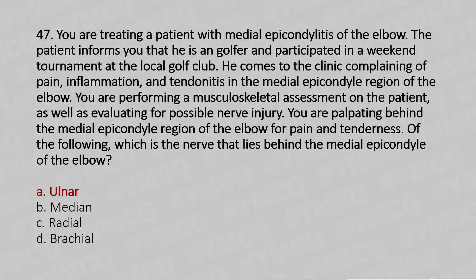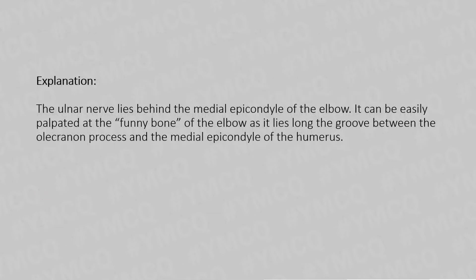The ulnar nerve lies behind the medial epicondyle of the elbow. It can be easily palpated at the funny bone of the elbow, as it lies along the groove between the olecranon process and the medial epicondyle of the humerus.